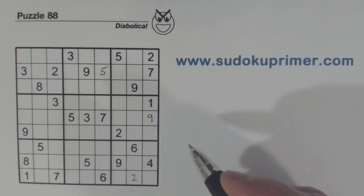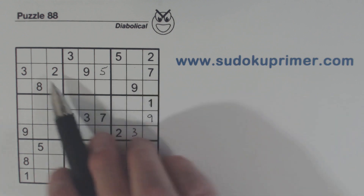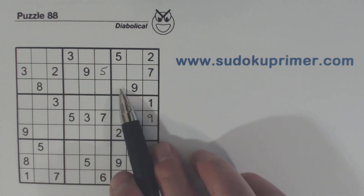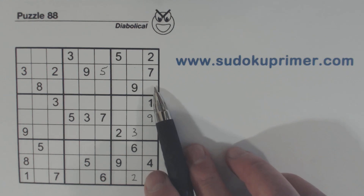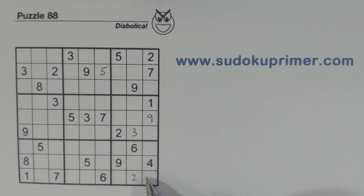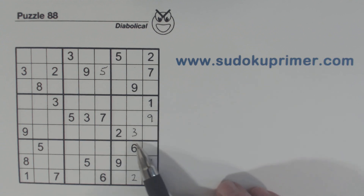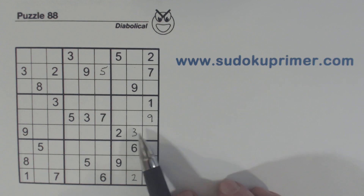We've got a three right here. First of all, we've got a three here and a three here, so one of these is a three. And because of this diagonal pattern and the one-seven twins we found, we know the three can go in one of these three cells — it can't go here or here. So using double column elimination, which is explained on the techniques section of SudokuPrimer.com, we know that the three in this box has to go right there.